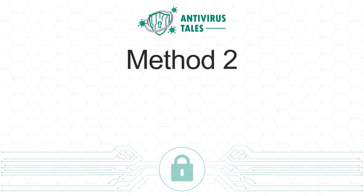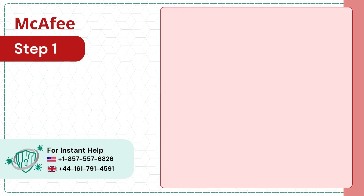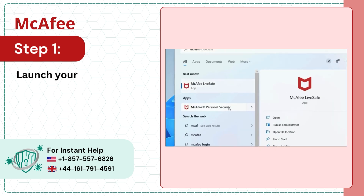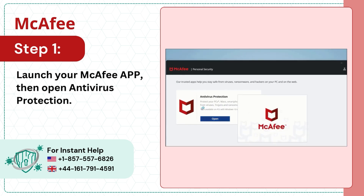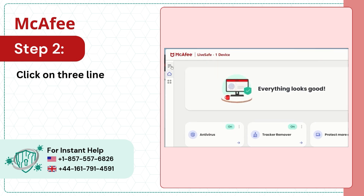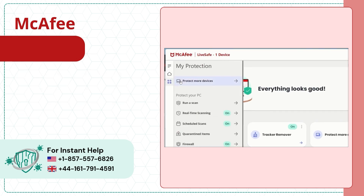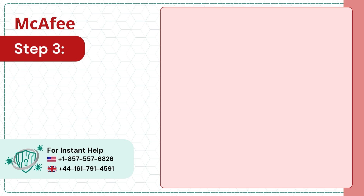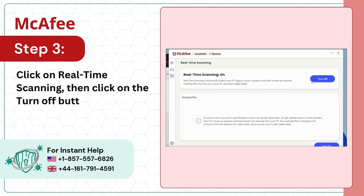Method 2: Temporarily Stop McAfee. Step 1: Launch your McAfee app then open Antivirus Protection. Step 2: Click on the 3-line icon in the top left corner and select the My Protection option. Step 3: Click on Real-Time Scanning, then click on the Turn Off button.